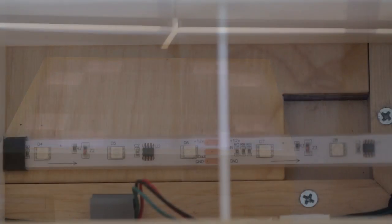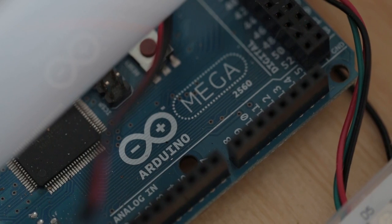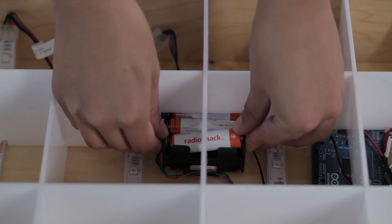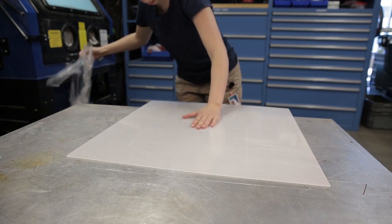To make this project I went to Radio Shack and bought color-changing LED strips, an Arduino Mega, and batteries. Then I went to the hardware store and got wood for the frame and plastic for the top.